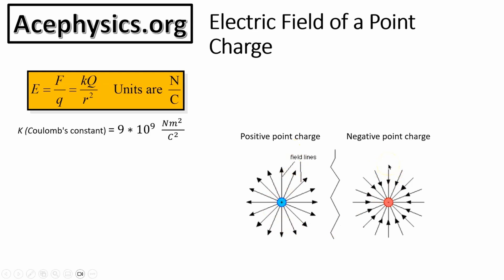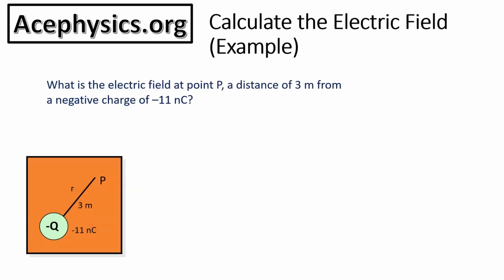If you place a positive charge near a negative point charge, that positive charge would feel a force directed inward toward it. The formula for the electric field comes from Coulomb's law: E = kq/r². The units are newtons per coulomb. k is a constant equal to 9 × 10⁹. Q is the value of the point charge at the center, measured in coulombs. r is the distance from the charge to the point in space. The electric field drops off as 1/r² — as you move farther from the charge, the field gets smaller.